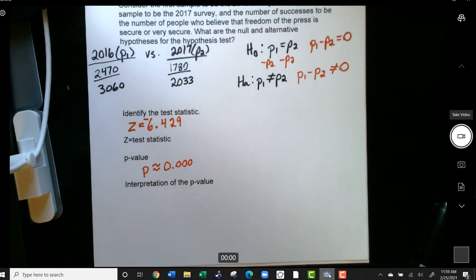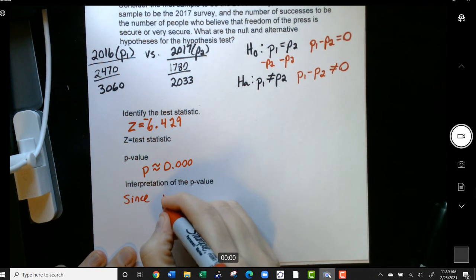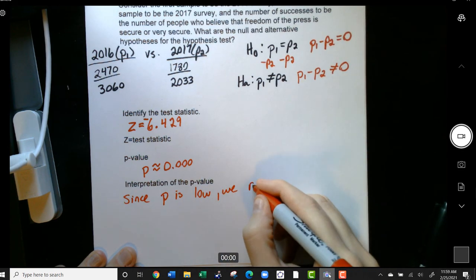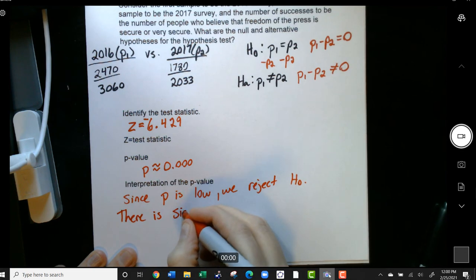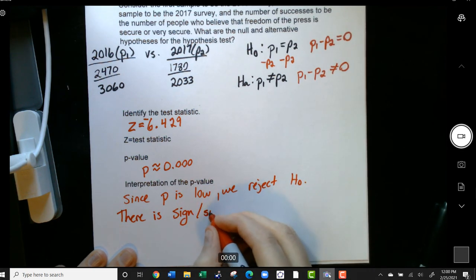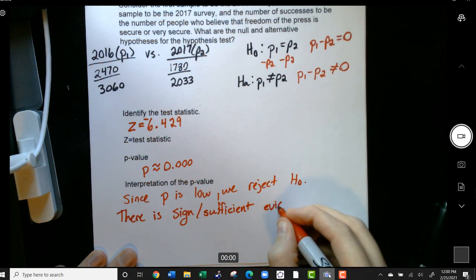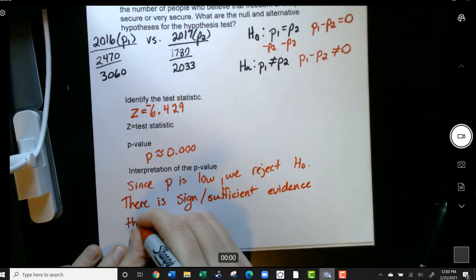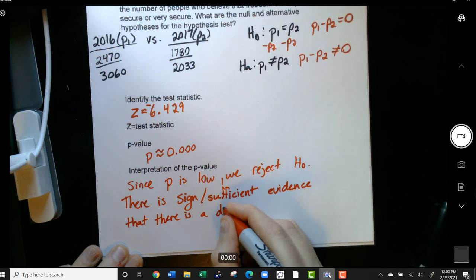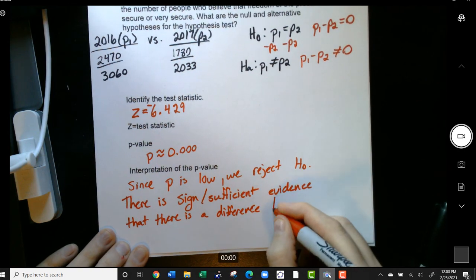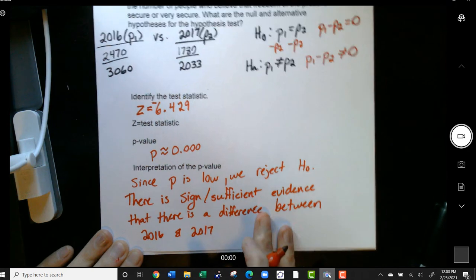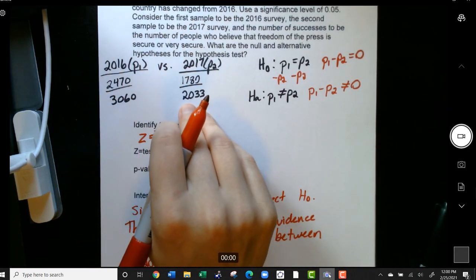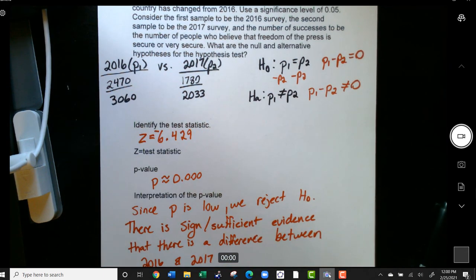All right, so we have our p-value and we have our test statistics to interpret the p-value. Since our p-value is so low, we reject H0. What that means is there is significant or sometimes we say sufficient evidence that there is a difference between 2016 and 2017. So as we move from one population, which was measured in 2016, to another population, which was measured in 2017, we can see that there is actually a measurable and significant difference between the two.